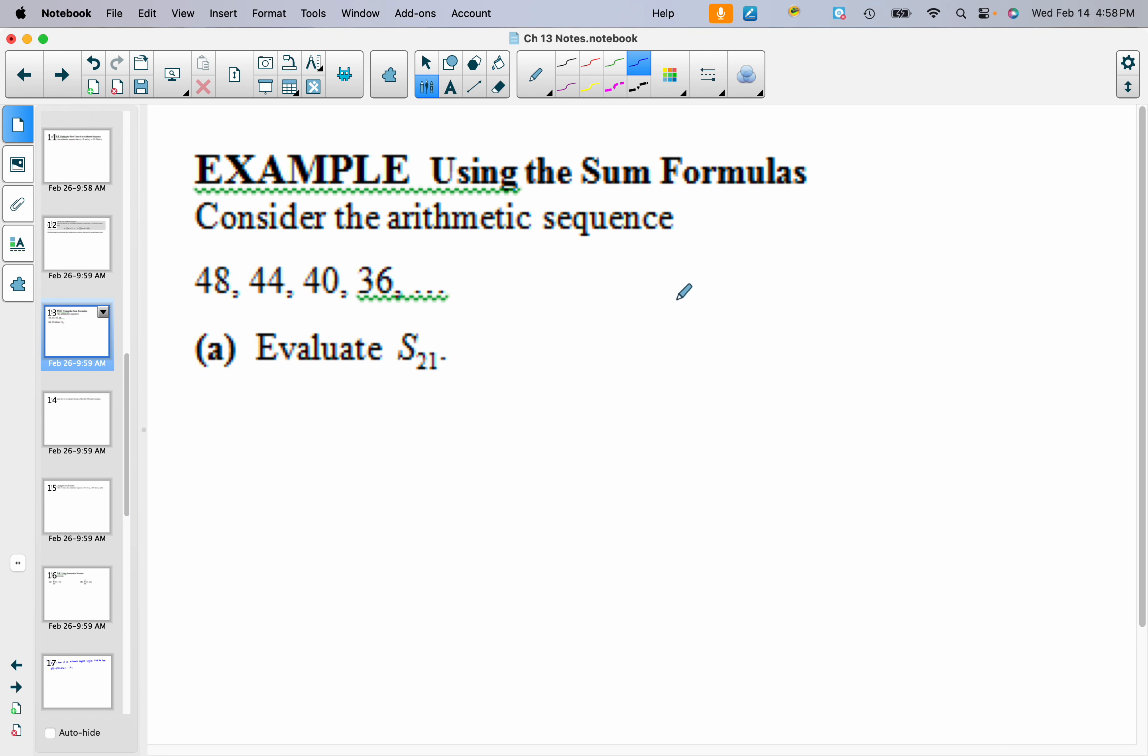Let's talk about some examples. For this first one, we want to find, this is the sequence 48, 44, 40, 36, and we want to evaluate S₂₁. So what do we know? I know that a₁ is 48, and I know d because notice it's going down, it's decreasing. I subtract 4, so we get d is negative 4.